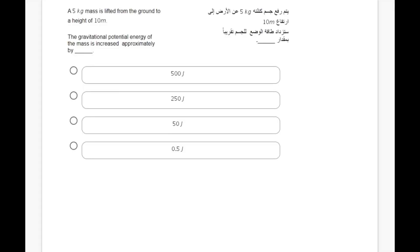So the following problem is an MSAT physics practice problem. Let's get right to it. A five kilogram mass is lifted from the ground to a height of 10 meters. The gravitational potential energy of the mass is increased approximately by—now how do we go about this problem?